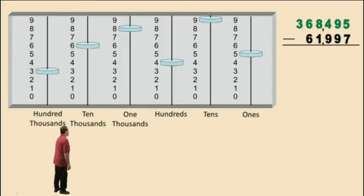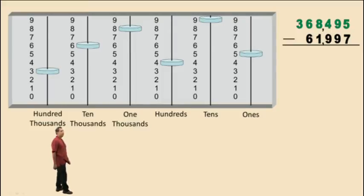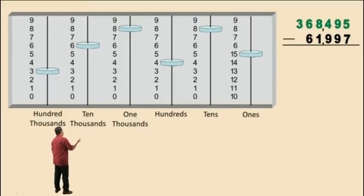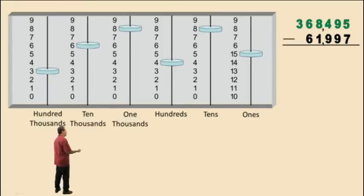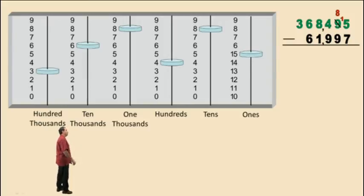Let's start with our ones column. Notice we have 5 subtract 7 — we can't do that in this vertical format. We have to borrow from our tens column. So notice our tens column moves from a 9 down to an 8, and we now have 15 ones because borrowing 1 ten means we borrowed 10 ones. So we write that up there. Notice we have 15 ones, and now we can subtract in the ones column: 15 subtract 7 gives us 8.